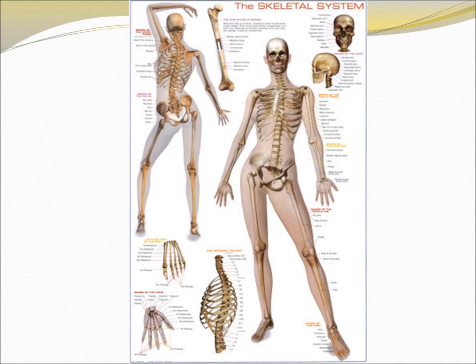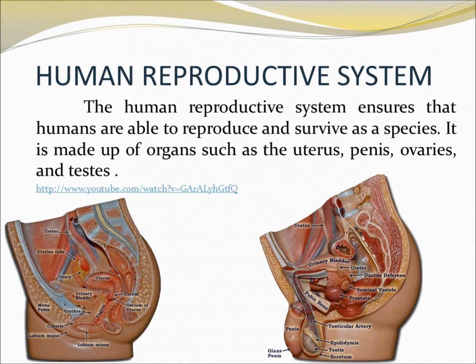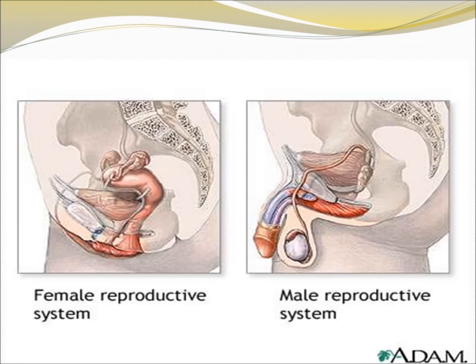The human reproductive system ensures that humans are able to reproduce and survive as a species. It is made up of organs such as the uterus, penis, ovaries, and testes. You can see the picture here of both male and female reproductive organs.